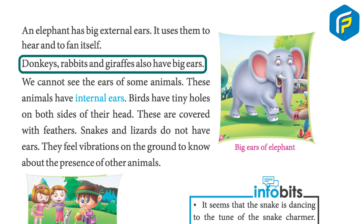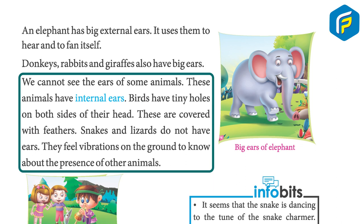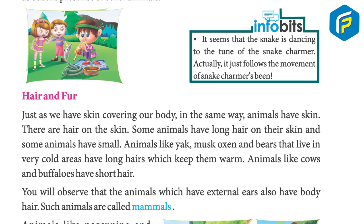Donkeys, rabbits, and giraffes also have big ears. Some animals have internal ears that we cannot see. Birds have tiny holes on both sides of their head, covered with feathers. Snakes and lizards do not have ears — they feel vibrations on the ground to detect other animals. In fact, a snake does not dance to the tune of a snake charmer; it just follows the movement of the charmer's been.